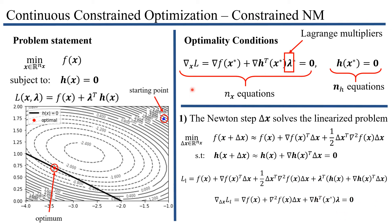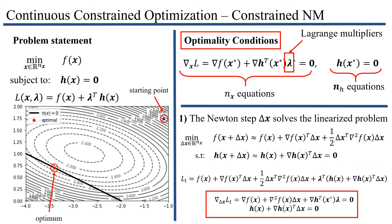Because we want to satisfy the gradient condition, we take the derivative of the Lagrangian with respect to delta x. Various terms drop out and we obtain the gradient of our Lagrangian, which gives us the optimality conditions for our approximate problem. We also include our approximate equality constraints, which are linearized, and now we want to solve this system, because this system gives us the solution to our approximate problem. We're essentially getting the optimality conditions for our approximate problem.